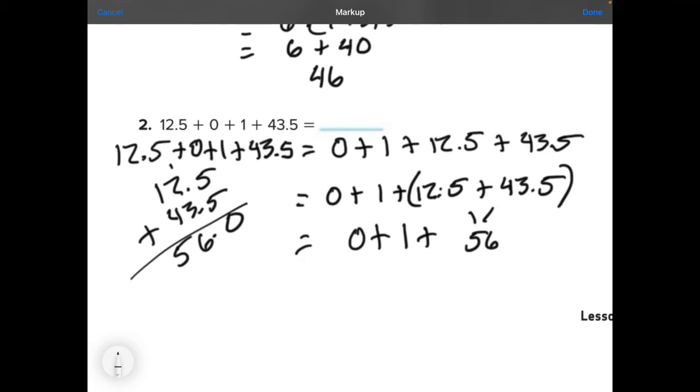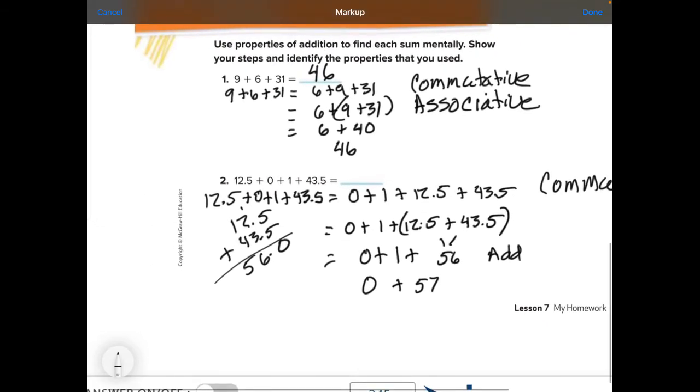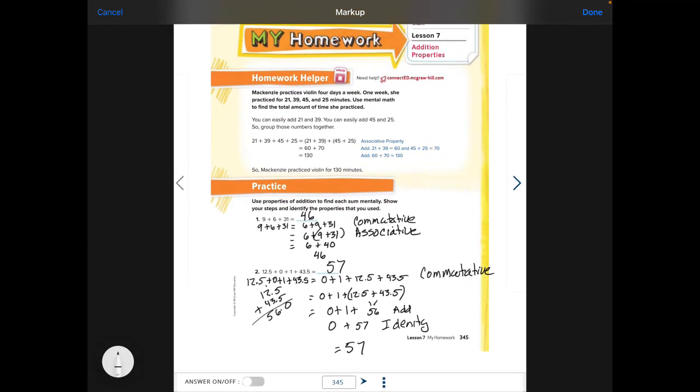We need to do 1 plus 56 is 57 plus 0. And what property is that where it doesn't lose its identity? So then our number is just a beautiful 57. I know that was a really long way, but this chapter wants you to label each step. Don't worry, it gets easier.